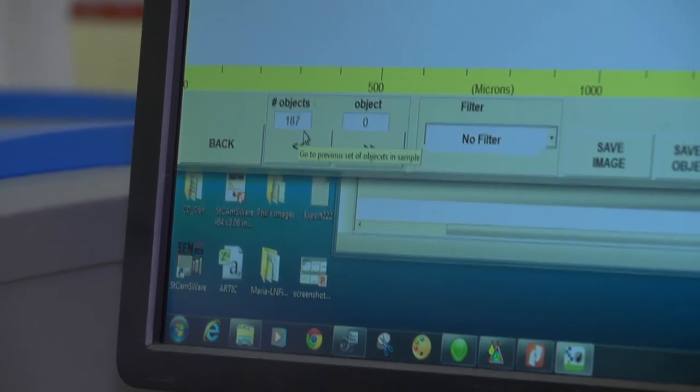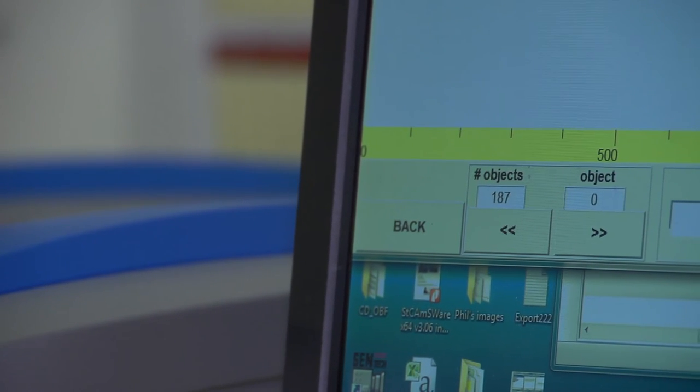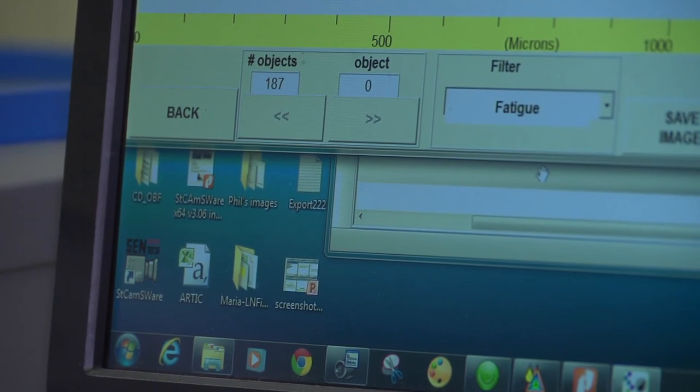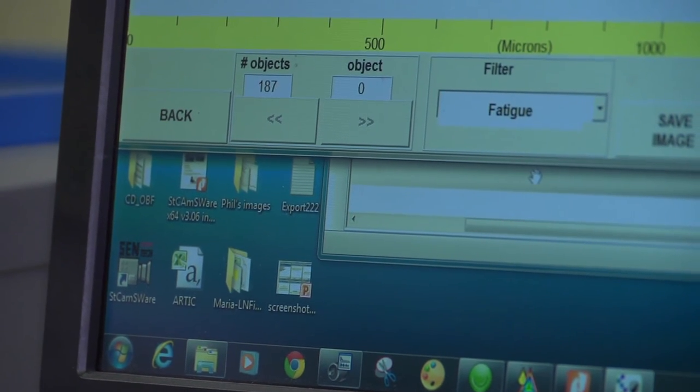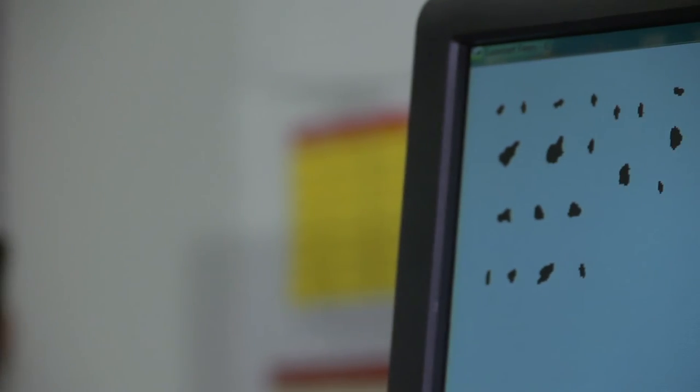And then you can actually filter if you're only interested in fatigue wear. You can get an image of all the various platelets. That's the typical traditional shape of what a fatigue particle would look like.